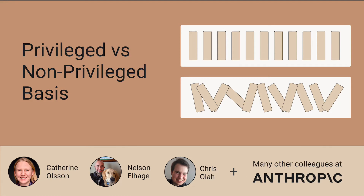Sometimes people ask me questions like, have I studied the neurons in a transformer's residual stream or the neurons in the value vectors? And I think this isn't quite the right way to think about it. The heart of it is a distinction I'm going to make between what I'll call a privileged basis and a non-privileged basis. The idea is that sometimes a neural network representation has a special basis that is particularly meaningful to study.